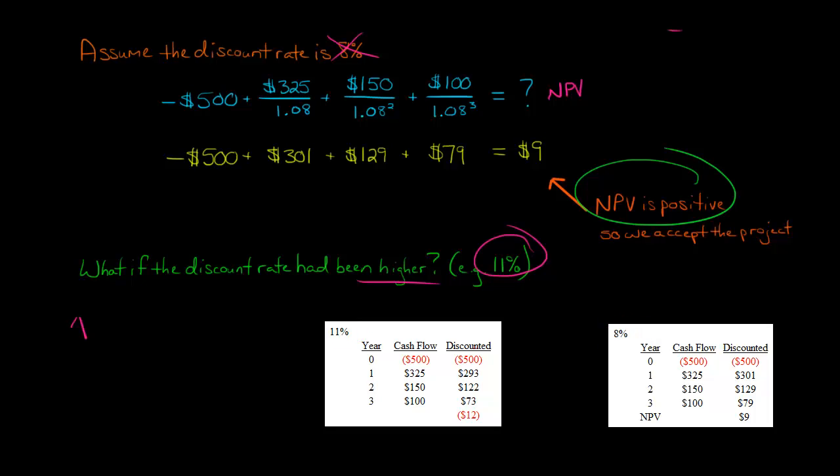So if you increase the discount rate, if you increase R, you're going to reduce the sum of the discounted cash flows. Let's take, for example, after one year, the $325 cash flow. Under 8%, it was worth $301. So $325 received one year from now at a discount rate of 8% is worth $301 today. But if the discount rate is 11%, it's only worth $293. The higher the discount rate, the less that these future cash inflows are going to be worth in terms of present day dollars.